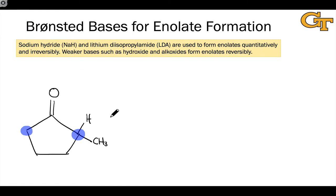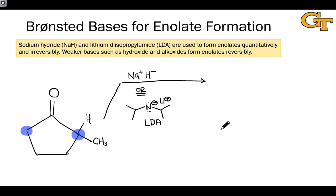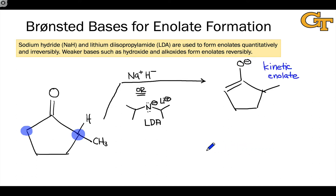The strength of the base used to deprotonate has a profound effect on which position is deprotonated. When we use a very strong base that reacts irreversibly and completely — something like sodium hydride with the very basic H⁻ anion, or a sterically hindered amide base with an anionic nitrogen, the most famous example being lithium diisopropylamide (LDA) — deprotonation occurs selectively at the less substituted carbon. Because deprotonation is driven by kinetics, this less substituted enolate is called the kinetic enolate; it forms more rapidly and is the favored major product.